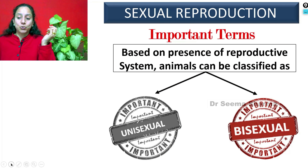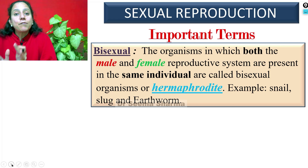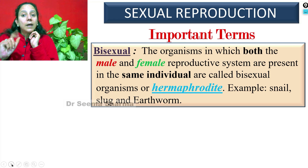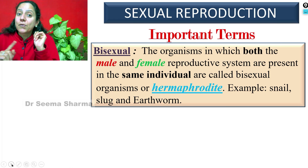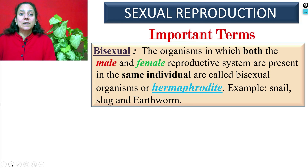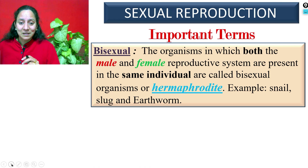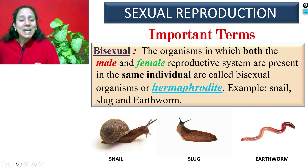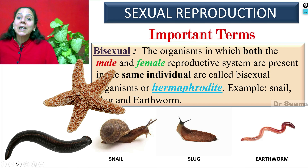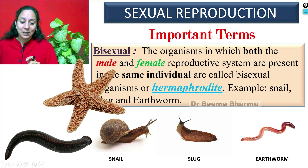Now let us take up the term bisexual. Bisexual refers to organisms in which both the male and female reproductive systems are present in the same individual. They are called bisexual or hermaphrodite. You may be surprised to hear this — it is amazing! Examples include snail, slugs, earthworms, starfish, and leech. They are hermaphrodite or bisexual, meaning both male and female reproductive systems are present in the same body.